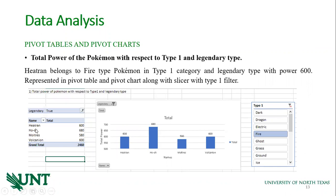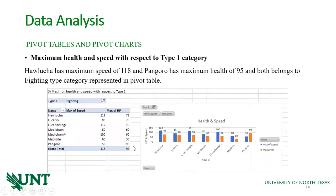Here I have used one pivot table which has name and total power, with the applied filter set to legendary as true and type 1 selected as fire type Pokemon, so it shows the legendary fire type Pokemons. In the same way, I can find maximum health and maximum speed with respect to the type 1 category. Here it shows values of maximum speed and maximum health belonging to type 1 category fighting.